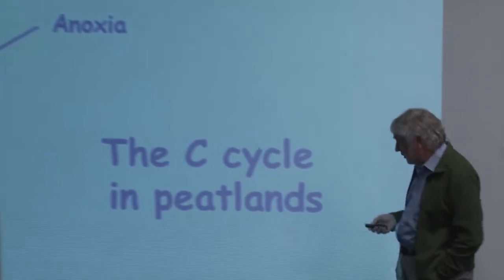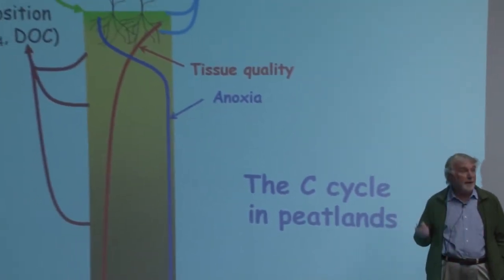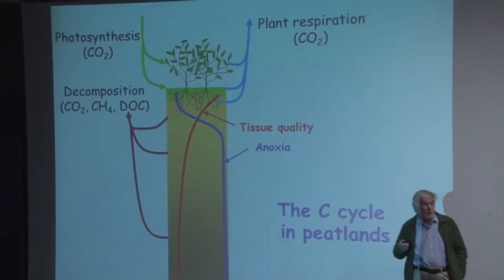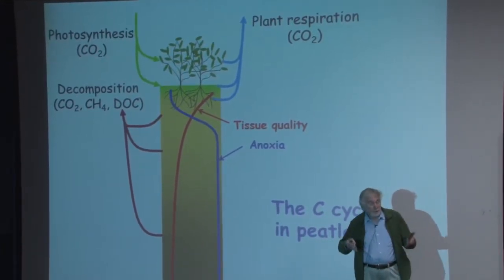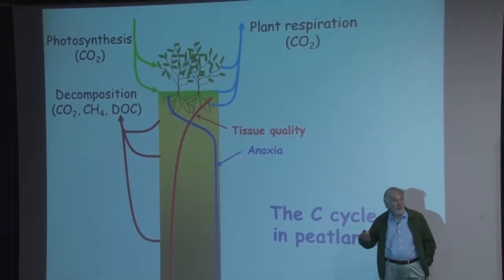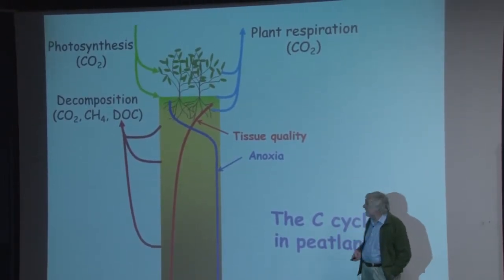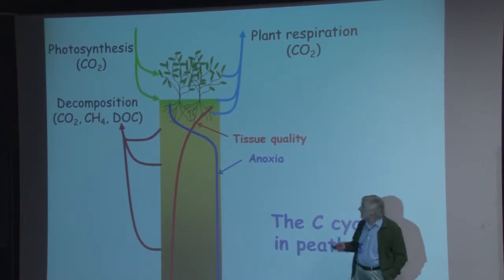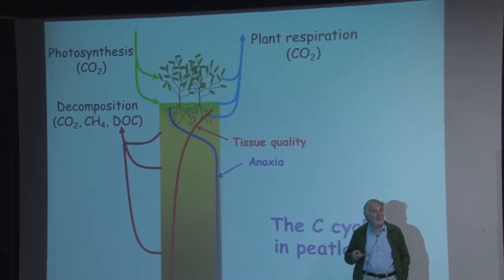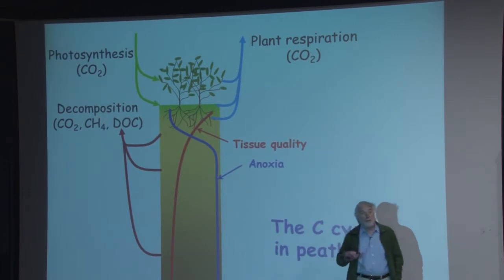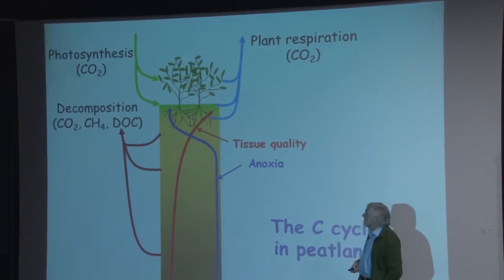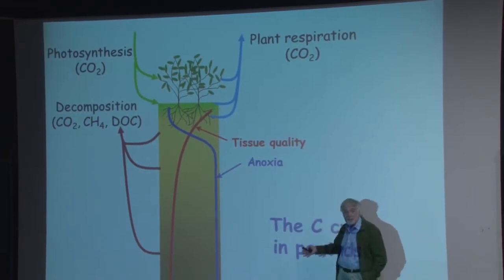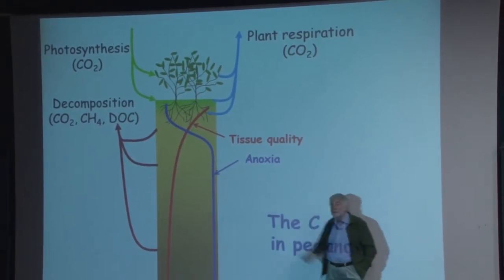The carbon balance in peatlands is shown in this simple cartoon. We take up carbon dioxide in plants; about half is lost back to the atmosphere through autotrophic respiration, and the difference is net primary production — the accumulation of plant material. Plants die, senesce, produce litter, and decompose, producing three things: carbon dioxide, methane (an important greenhouse gas), and dissolved organic carbon (DOC), which makes the water draining peatlands often quite brown. What's left behind after that process is the rate at which carbon accumulates in the profile.